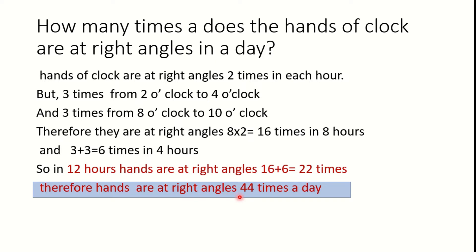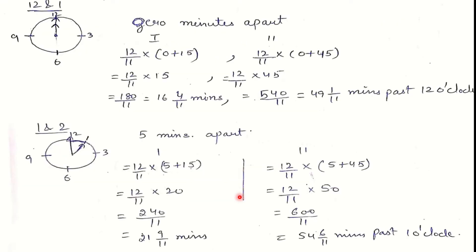The reason is that between 2 o'clock and 4 o'clock they are at right angles three times, and similarly from 8 o'clock to 10 o'clock they are at right angles three times. So in 12 hours they are at right angles 22 times, and in the entire day 44 times. Now with the help of some questions we will understand why this is happening. Let's first look at the period between 12 and 1 o'clock.